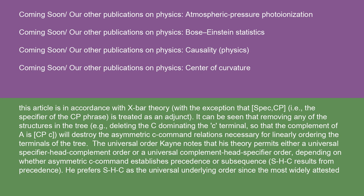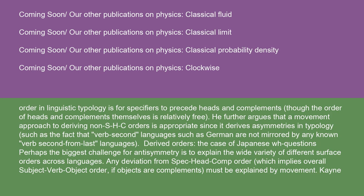The universal order: Kayne notes that his theory permits either a universal specifier-head-complement order or a universal complement-head-specifier order, depending on whether asymmetric C-command establishes precedence or subsequence. SHC results from precedence. He prefers SHC as the universal underlying order since the most widely attested order in linguistic typology is for specifiers to precede heads and complements, though the order of heads and complements themselves is relatively free. He further argues that a movement approach to deriving non-SHC orders is appropriate since it derives asymmetries in typology, such as the fact that verb-second languages such as German are not mirrored by any known verb-second-from-last languages.